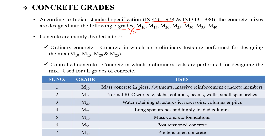The grades are M10, M15, M20, M25, M30, M35, and M40. We divide concrete into ordinary concrete and controlled concrete.